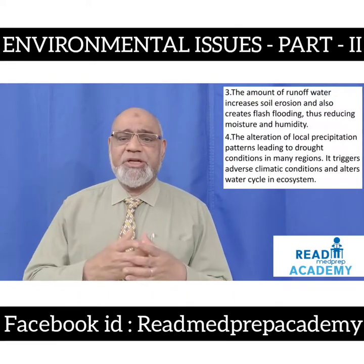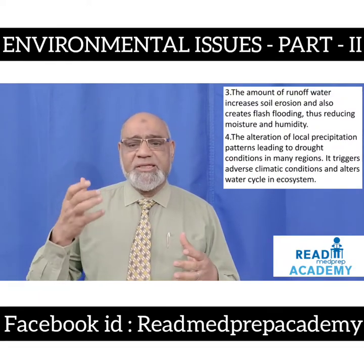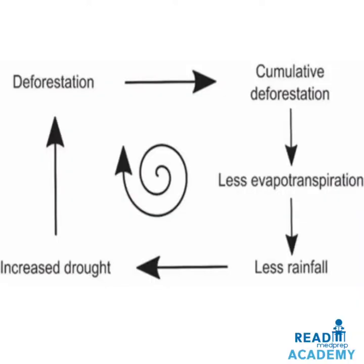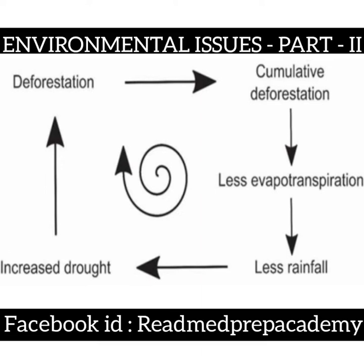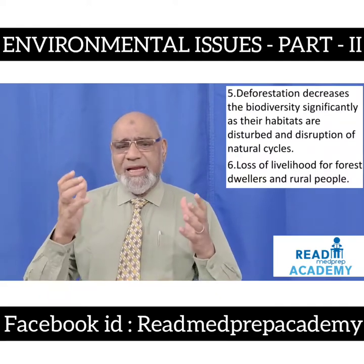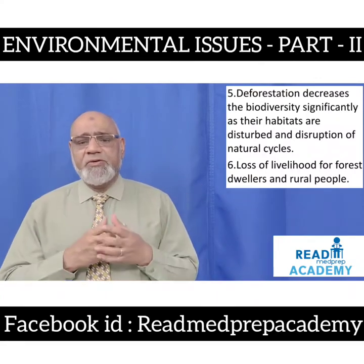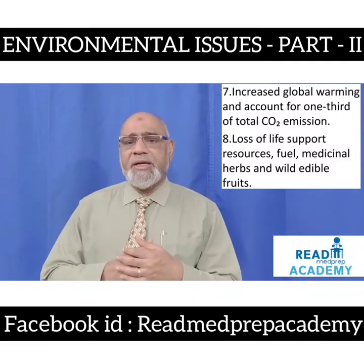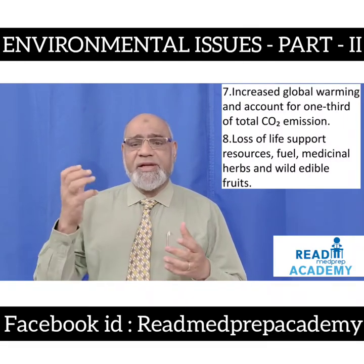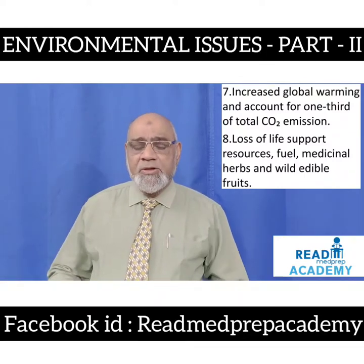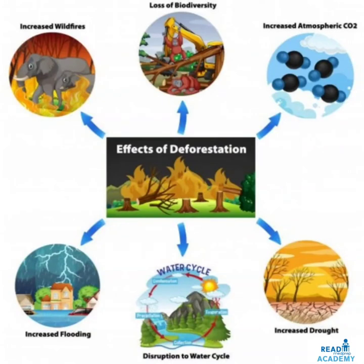Deforestation triggers adverse climatic conditions and alters the water cycle in the ecosystem. Cumulative deforestation causes less evapotranspiration, which results in less rainfall; less rainfall causes increased drought; and increased drought again will cause more deforestation — so this cycle will continue if we destroy the forest. Deforestation decreases biodiversity significantly as habitats are disturbed. Loss of livelihood for forest dwellers and rural people. Increased global warming accounts for one third of the total carbon dioxide emissions. Loss of life support resources including fuel, medicinal herbs and wild edible fruits. Effects to sum up: increased wildfires, loss of biodiversity, increased atmospheric carbon dioxide, increased drought, disruption of the water cycle, and increased flooding.